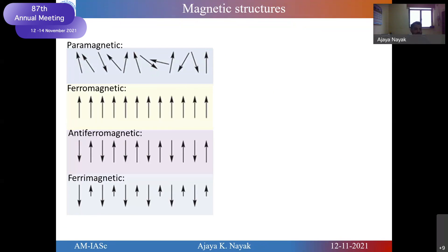We know paramagnetic materials, ferromagnetic materials where all spins align in one direction, then antiferromagnetic where neighboring spins align in opposite directions, and ferrimagnetic with different sublattices having different magnetic moments. In all these cases, one thing in common is that all magnetic moments are collinear in nature.